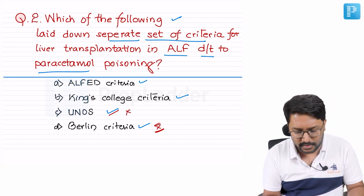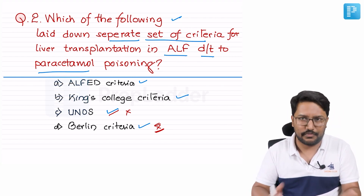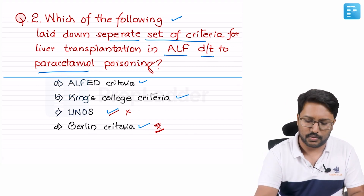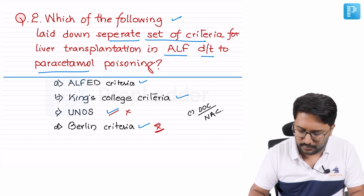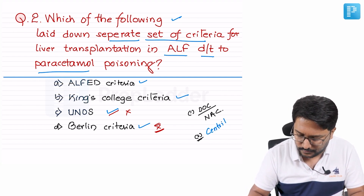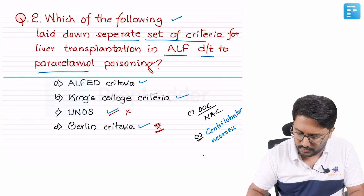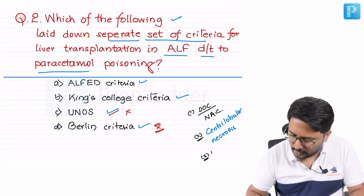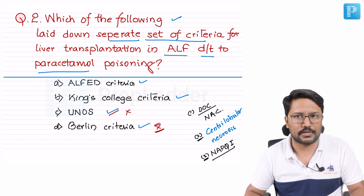We are left between Alfred Criteria and King's College Criteria. Important points about paracetamol poisoning: the drug of choice is N-acetyl cysteine; the nature of liver necrosis is centrilobular necrosis; and the toxic or toxigenic metabolite of paracetamol poisoning is NAPQI. These are known facts.